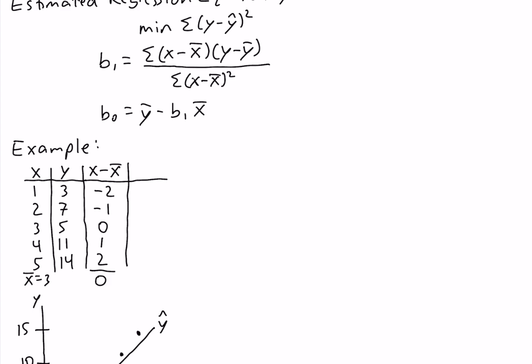Our next column is y minus y-bar. The mean of y is equal to 8. So: 3 minus 8 is negative 5, 7 minus 8 is negative 1, 5 minus 8 is negative 3, 11 minus 8 is 3, and 14 minus 8 is 6. Again, this column is the deviations about the mean of y — it should sum to 0, and we see that it does.